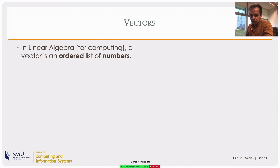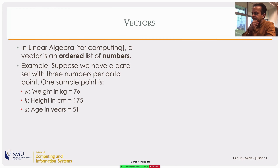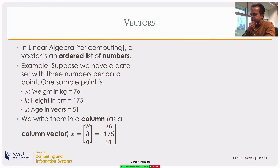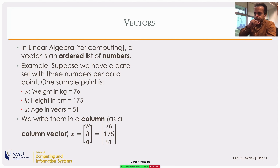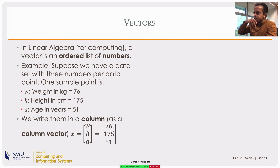Vectors in our context are just ordered lists of numbers, arranged as a column. For example, if I have three numbers — weight, height, and age: 76 kilos, 175 centimeters, and 51 years — that becomes a column vector. The reason for using weight, height, and age is to illustrate to physics buffs that these quantities don't have to mean the same physical thing. In computer science, the first component can be mass, the second length, the third time — all fine as components of a column vector.